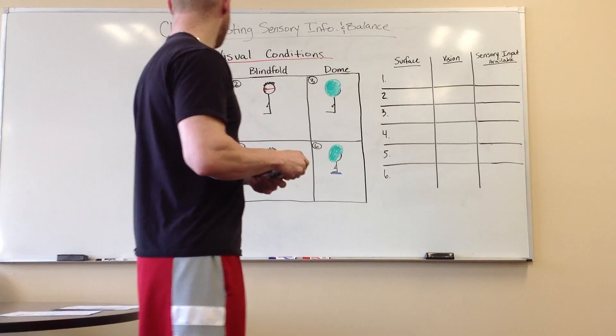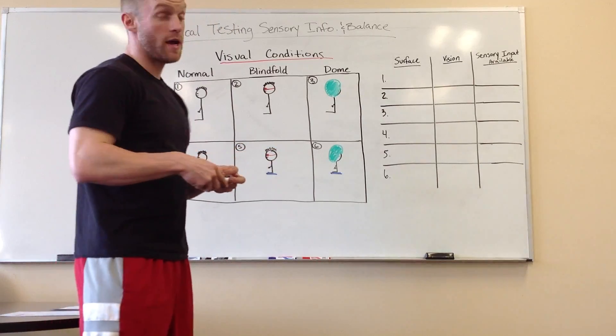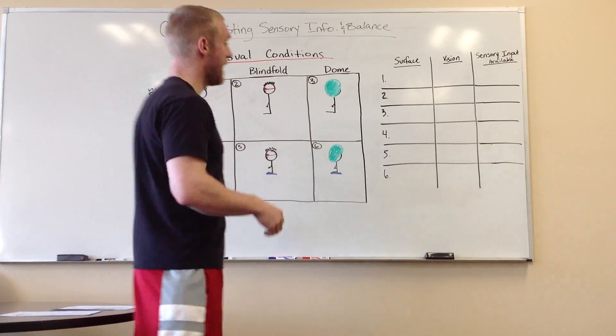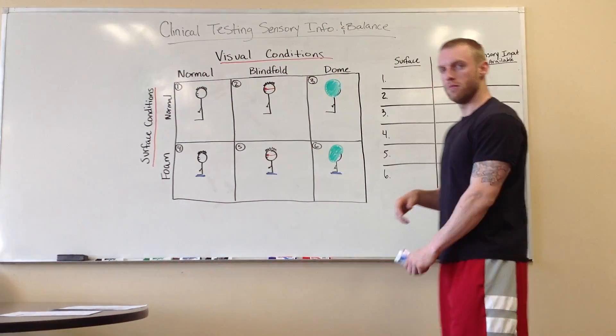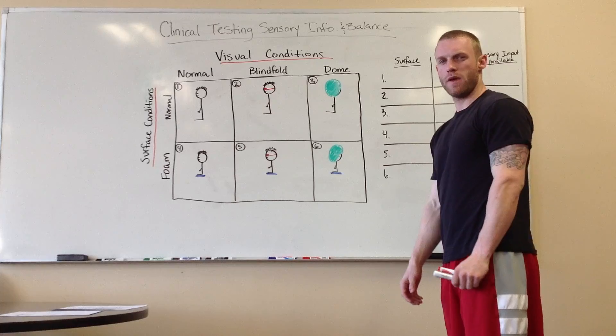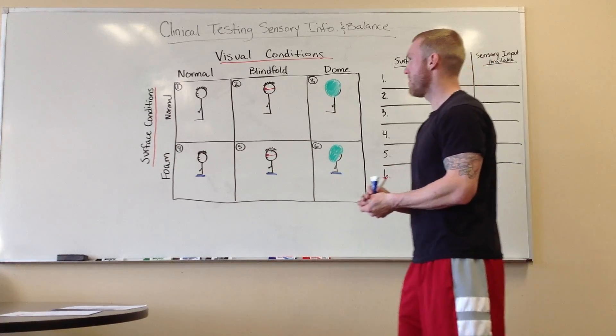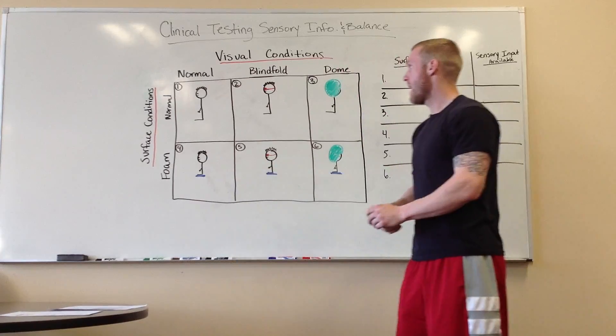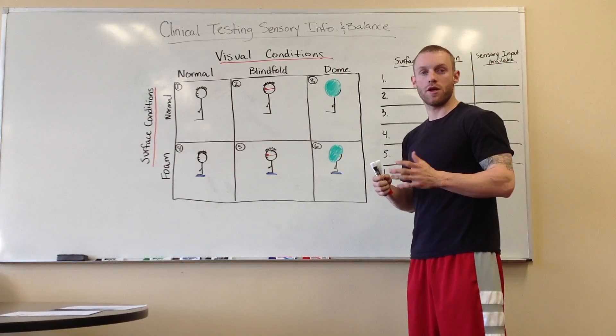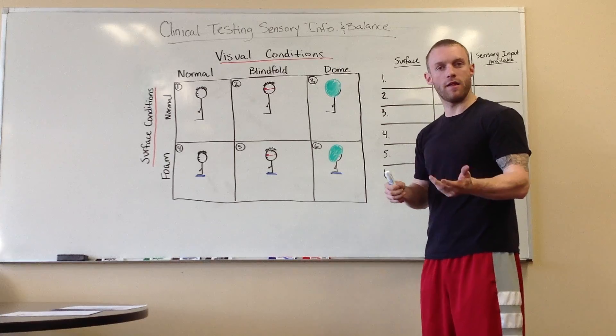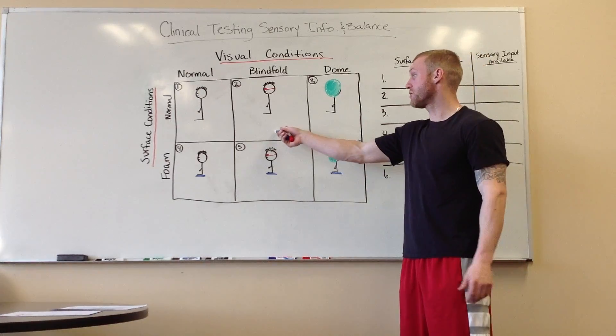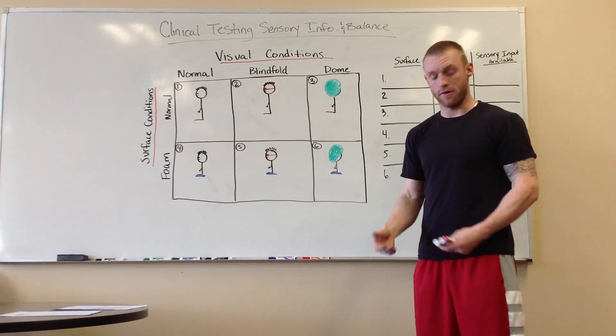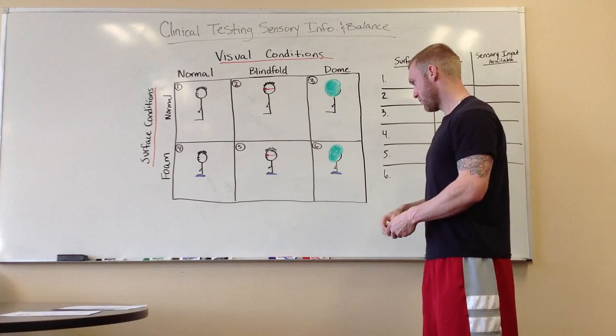All right, so I'm going to do this video and hopefully I can explain it fairly simply. This is pretty much what we did in the lab with Grizzly about a month ago, maybe a little less than that, with being on a normal surface or being on a foam pad and determining which sensory input is available. And if you fail at that certain point of the testing, which sensory input is impaired. So we're going to walk through this slow.